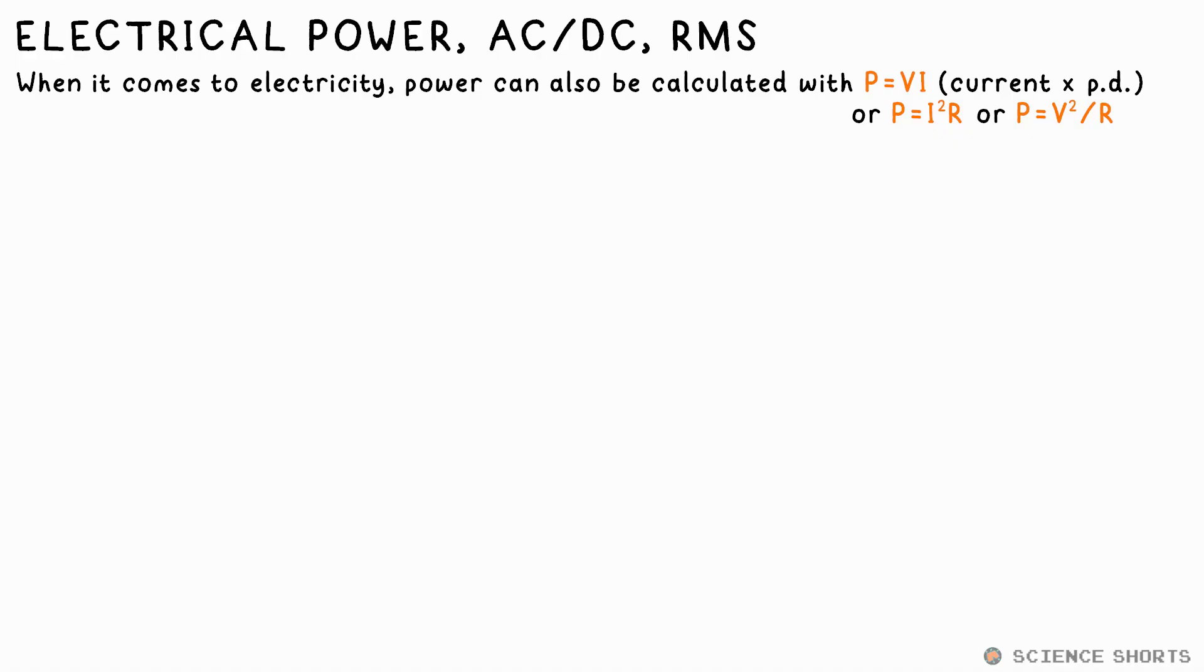Power is the rate of energy transferred, so energy divided by time. However, when it comes to electricity, P equals VI.